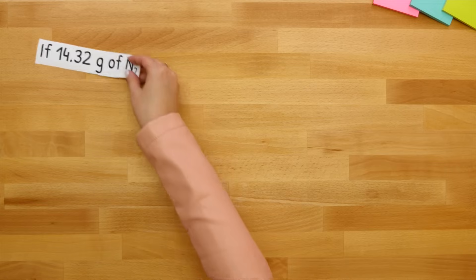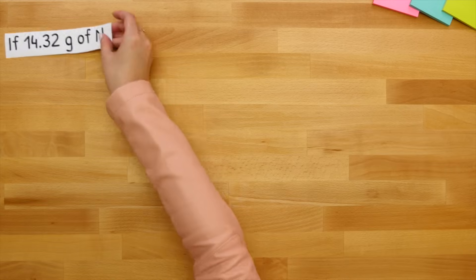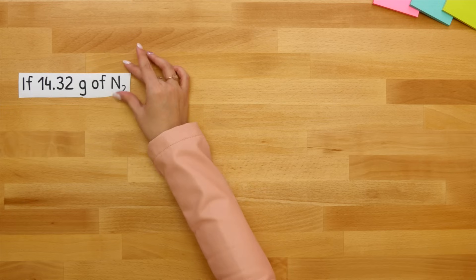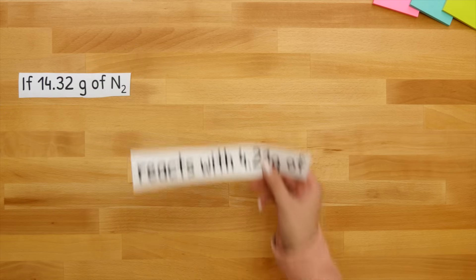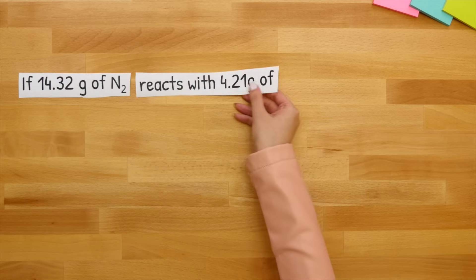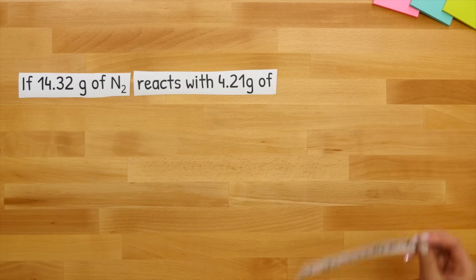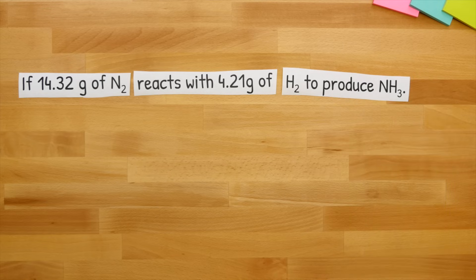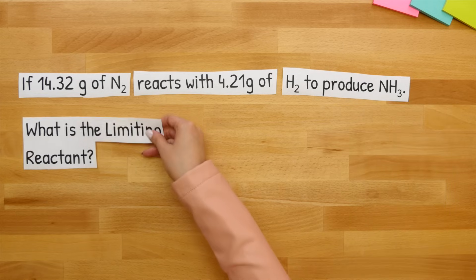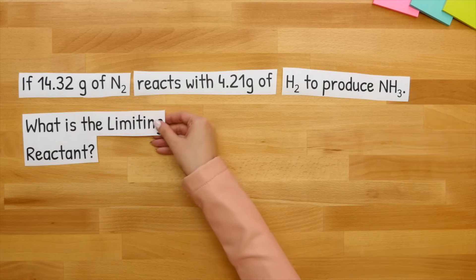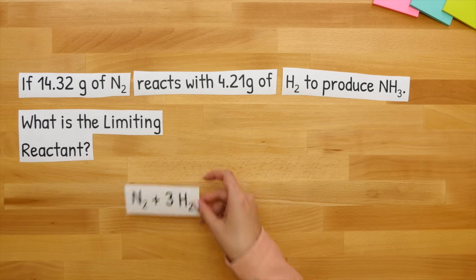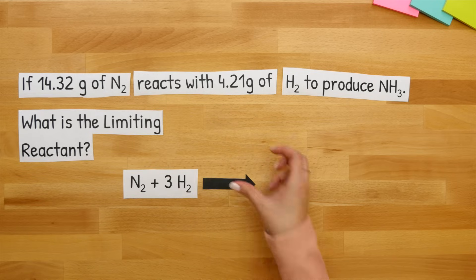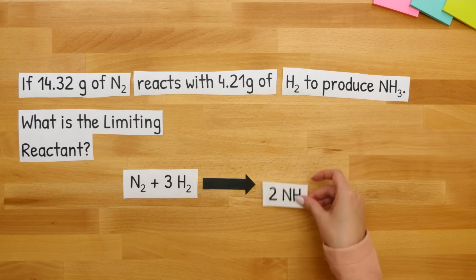Let's try that example. If 14.32 grams of N2 reacts with 4.21 grams of H2 to produce NH3, what is the limiting reactant? This question provides us with a balanced equation.